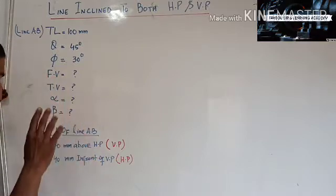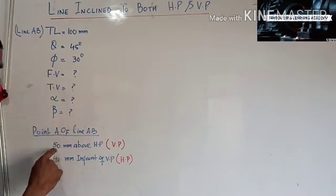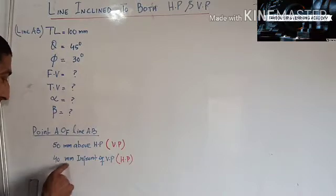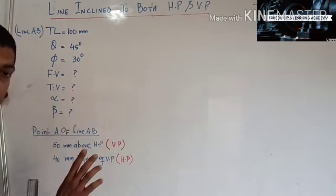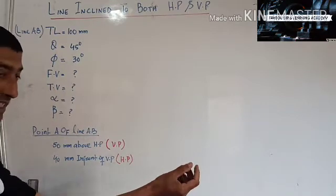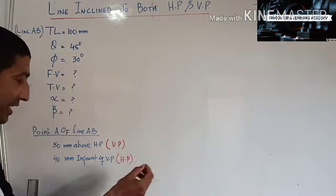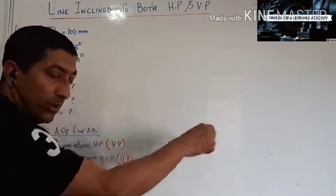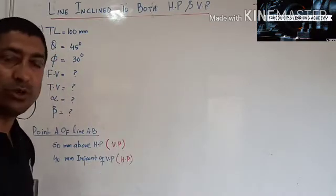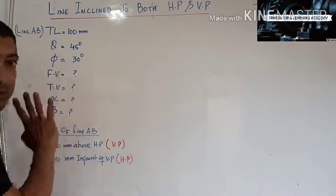One more condition we are assuming: end A of line AB is 50 mm above HP and 40 mm in front of VP. As I said in previous classes, when a line is above HP it is seen in VP, and when a line is in front of VP it is seen in its top view, that is in HP.